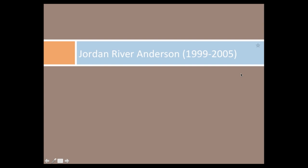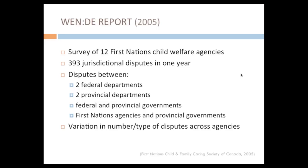Moving on — we wanted to move from the story of Jordan and his tragic situation to the broader context that led to that case. Underlying that dispute is a legislative framework in which the federal government has responsibility for providing health and social services to status First Nations people living on reserve, and the provincial government has responsibility for providing services to all other people. This basic division in responsibility can sometimes lead to jurisdictional disputes — disputes over who should pay and what standards should be implemented.